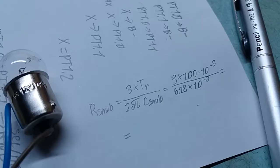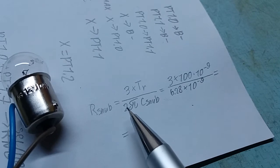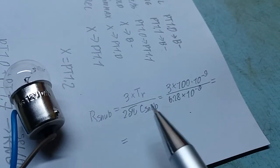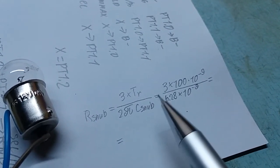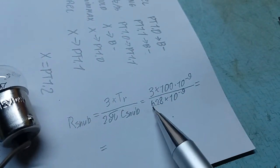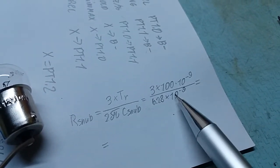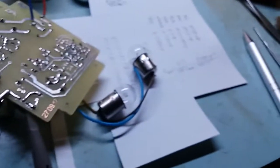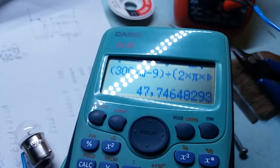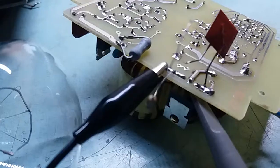Next we use a formula: this very simple formula which you can see is three ringing periods over 2π times C snub (the capacitor). The values: three times 100 nanoseconds over 2π, roughly 628, times one nanofarad. If you punch it into the calculator, you'll see 47.7 ohms, so we can use a 47 ohm resistor.